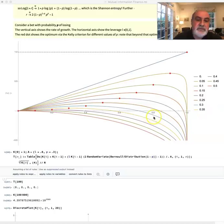And of course, 0.3 is the one we're going to focus on, 30% probability of losing.